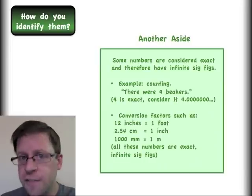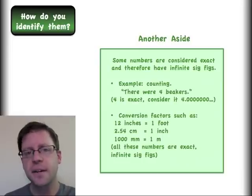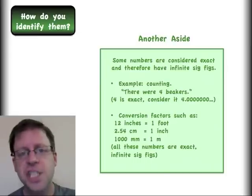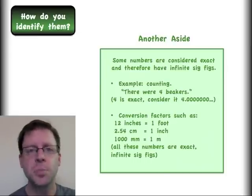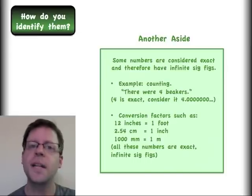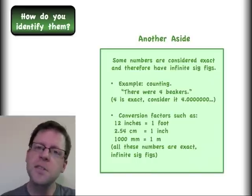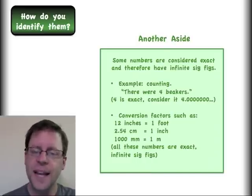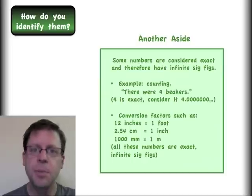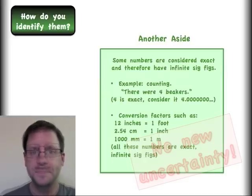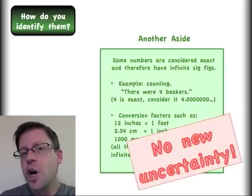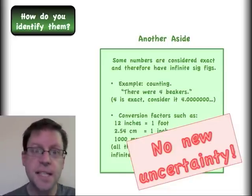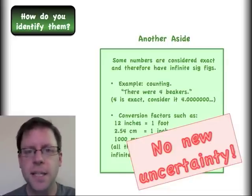Many conversion factors are also considered to be exact values. Like 12 inches by definition is equal to one foot, 2.54 centimeters by definition is one inch. So when you have those exact conversion factors, you can use those too as having an infinite number of decimal places. A different way to say this is that there is no new uncertainty that is all of a sudden put in because I'm using these conversion factors or that counted number.